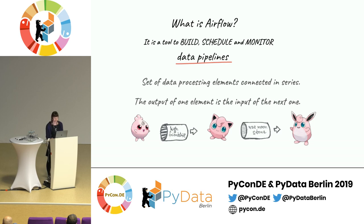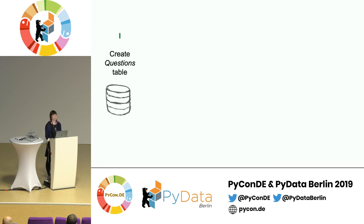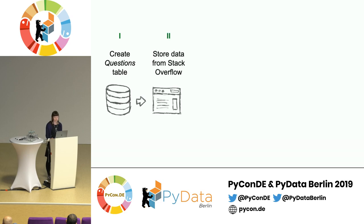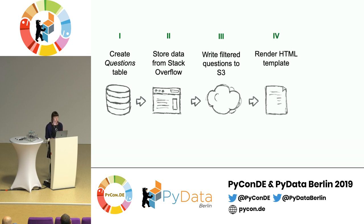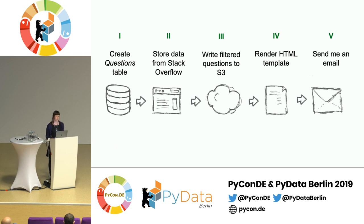You want to get fresh questions from Stack Overflow every day to your mailbox. The first task is to create a Postgres table where we'll store raw questions. The next step is to get data from the Stack Overflow API and store it in raw format. Then we'll filter this data to select only the good, interesting questions and store them as JSON in S3. The fourth task is to take data from S3 and render an HTML template to send as an email — and it's supposed to run every day automatically.